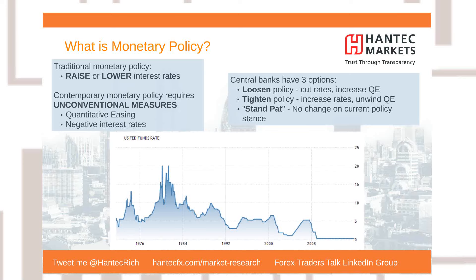Quantitative easing is the purchase of bonds, usually sovereign debt, but it can also be other debt instruments such as mortgage-backed securities. It's essentially money electronically created by the central bank. What quantitative easing actually achieves is a big debatable topic — it's designed to try to increase private sector spending and help generate inflation. Central banks have got three options: loosening monetary policy by lowering interest rates, tightening monetary policy by increasing interest rates, and no change — standing pat.